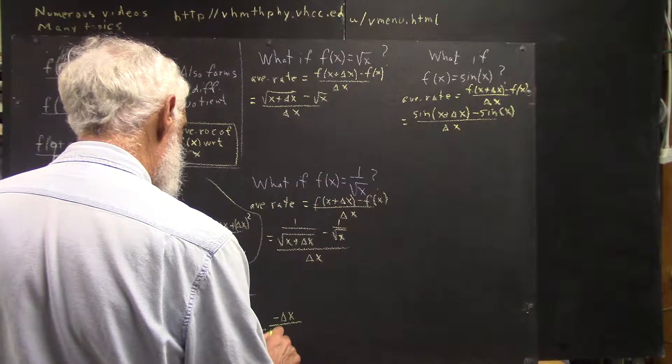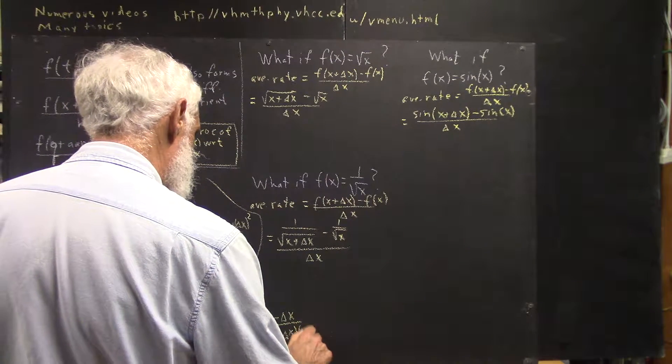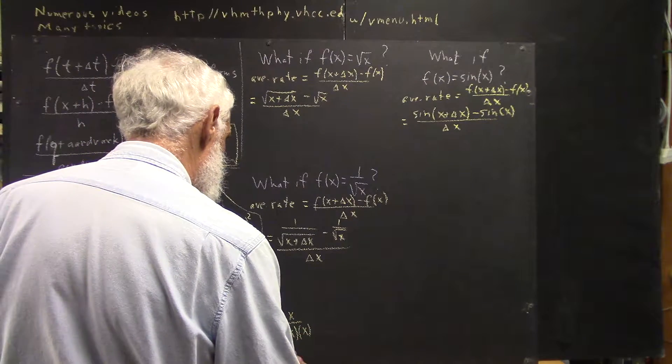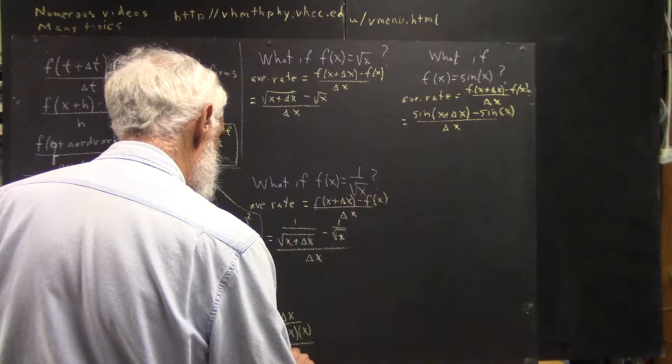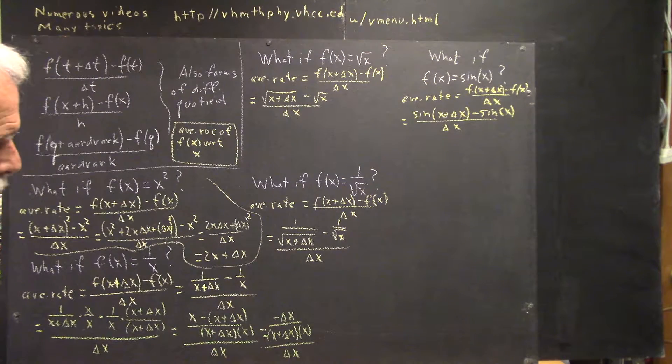x plus delta x divided by x plus delta x times x, all that divided by delta x.